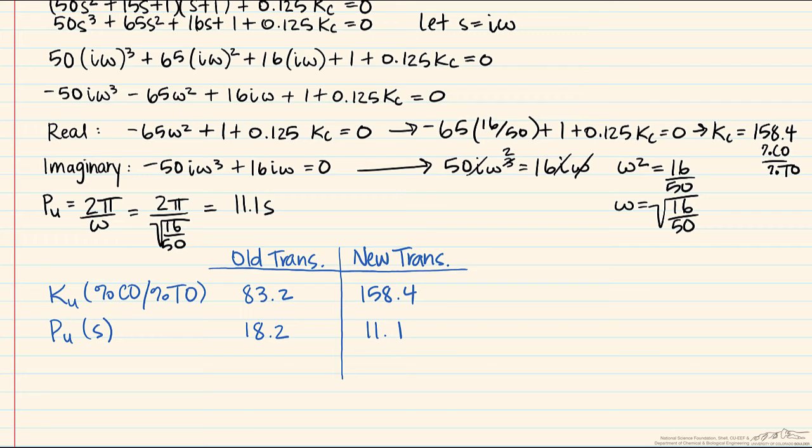What we notice here is that an increase in the ultimate gain as we went from the old transmitter to the new transmitter would indicate an increase in process stability. Why? Because there's now a much larger range over which the process can be run without any issues of stability. From the controller standpoint, the old transmitter we have from 0 to 83.2, whereas now we have 0 to 158.4. This causes an increase in process stability.